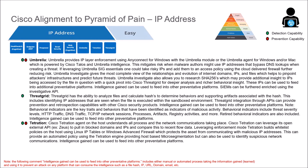Cisco Tetration agent on the host understands all processes and network communications taking place. Tetration can leverage an open external API to pull in block domains and IPs and compare that against recent flow data for analysis. Leveraging enforcement mode within Tetration builds whitelist policies on the host using Linux IP tables or Windows Advanced Firewall, protecting assets from communicating with malicious IP addressing. This provides automated policy using the Tetration engine, host-based micro-segmentation, and can identify suspicious network communication. Tetration has both detection and prevention capability, and intelligence gained can be used in other preventative platforms.